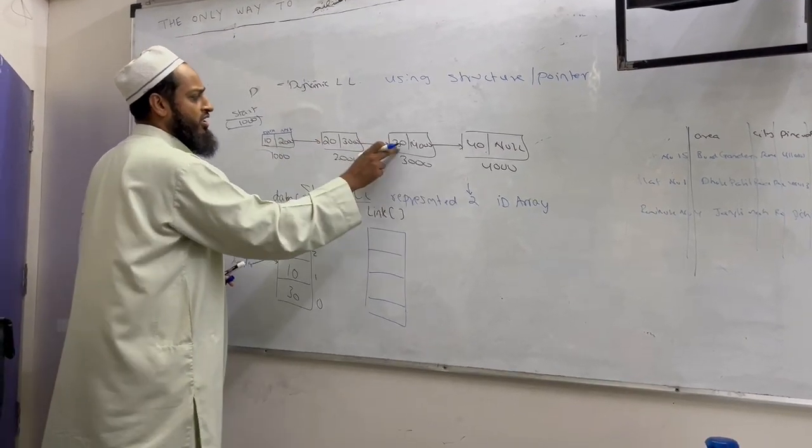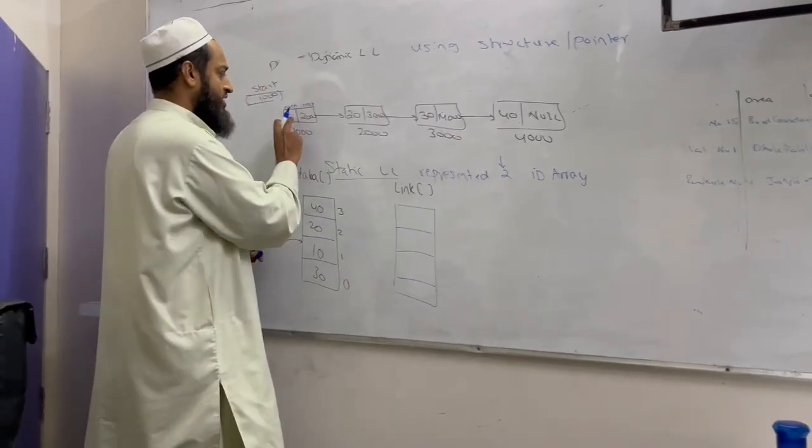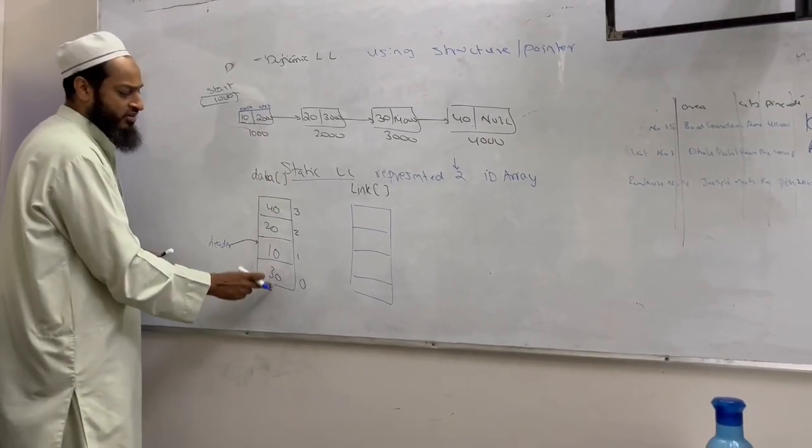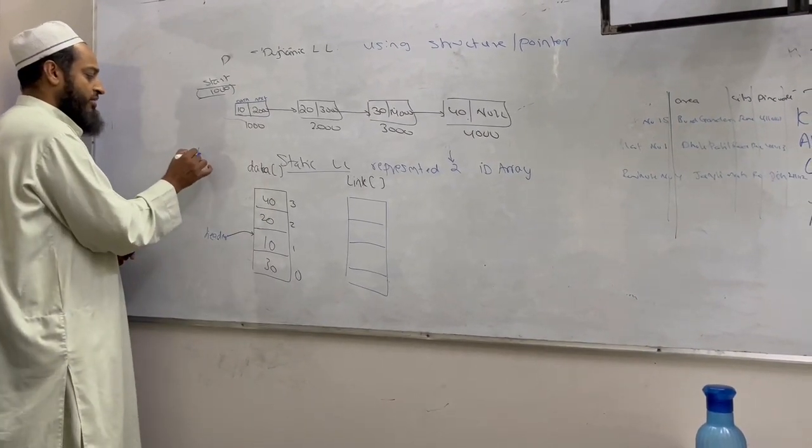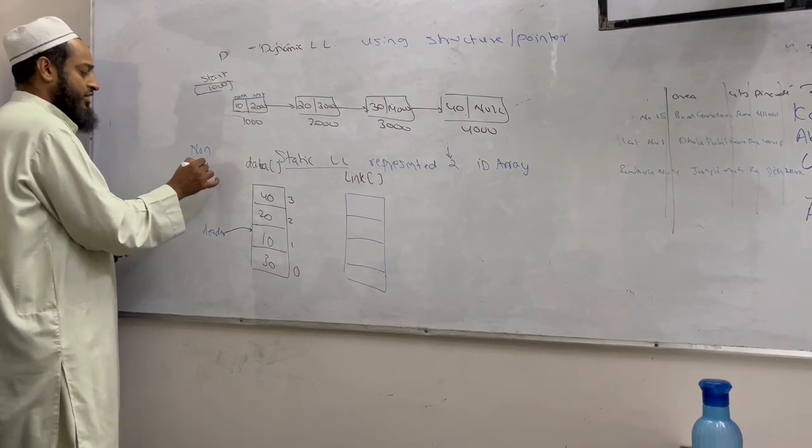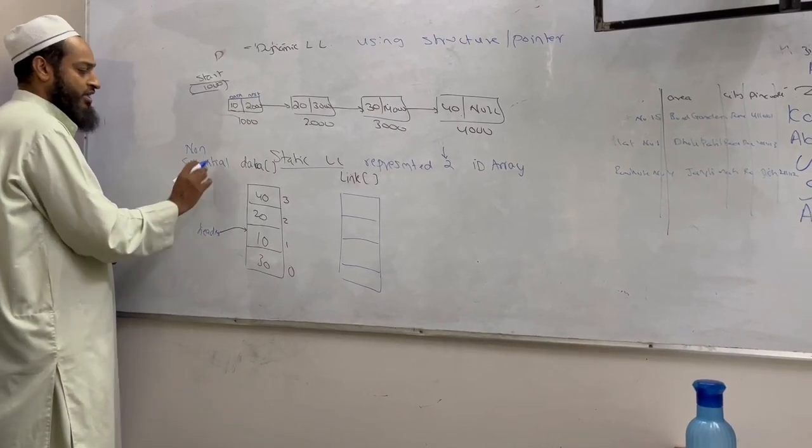So 10 is pointing to 20, 20 is pointing to 30, 30 is pointing to 40. So this data is represented in the 1D array in any non-sequential form. Remember this, data need not be sequential, it can be non-sequential.